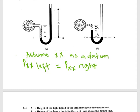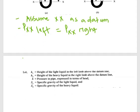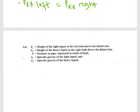Having taken our assumptions and given the information: h1 is the height of the light liquid in the left limb above the datum; h2 is the height of the heavy liquid in the right limb above the datum; h is the pressure in the pipe expressed in terms of head of water; s1 is the specific gravity of the light liquid; and s2 is the specific gravity of the heavy liquid. Therefore, for positive pressure, as in manometer A: